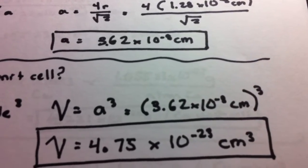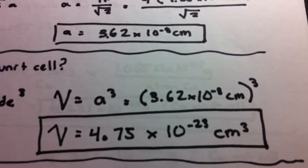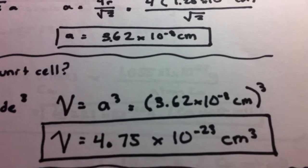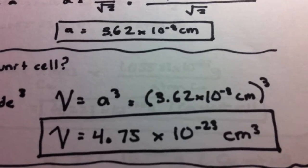And because we already know the edge, we calculated there, we can just cube that. And it comes out to our volume, 4.75 times 10 to the negative 23rd centimeters cubed.